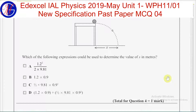In this question, we have to find the horizontal displacement of the bowl. The horizontal acceleration on the object is 0, since there are no forces acting on the object in the horizontal direction.